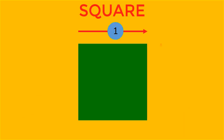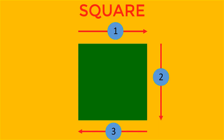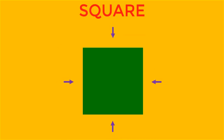Square is a closed figure. It has 4 sides: 1, 2, 3 and 4. All 4 sides of the square are equal.